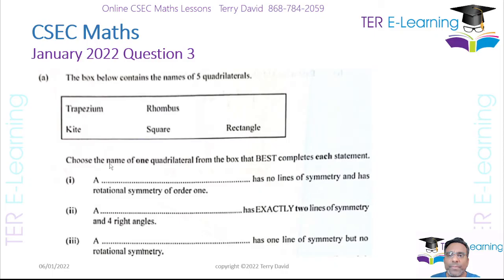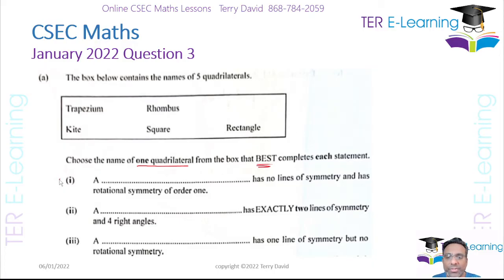So the third question: a box contains the names of five quadrilaterals — a trapezium, a kite, a rhombus, a square, and a rectangle. They want us to choose one quadrilateral from the box that best fits each description. Notice they put the word 'best' in brackets. The first one is something that has no lines of symmetry and rotational symmetry of order one.